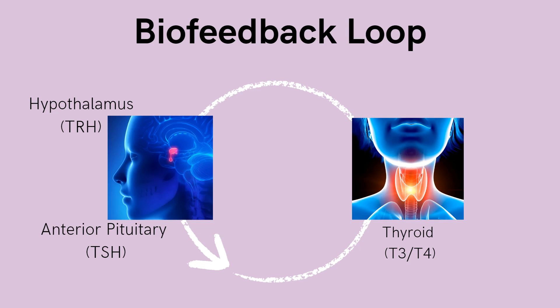One of the most difficult things to understand about thyroid function is the biofeedback loop. In the thyroid, it happens to be a negative feedback loop, which means that as the production of one hormone goes up, the production of another hormone goes down. First, we start in the hypothalamus, which releases thyroid-releasing hormone, otherwise known as TRH. That then causes the anterior pituitary to release the TSH. And that TSH works on, or stimulates, the thyroid to produce the T3 and T4 hormones, which are the active thyroid hormones. Once the levels of T3 and T4 are sufficient, then the hypothalamus can take a break until needed again to start the process over.